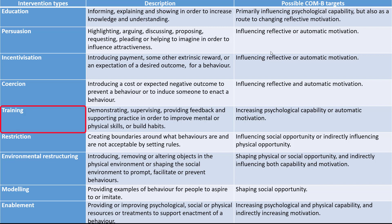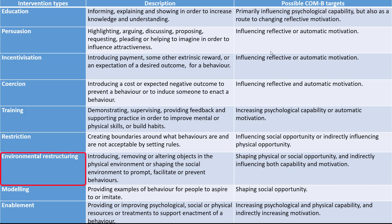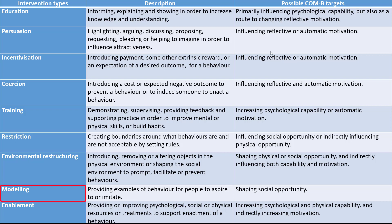Training involves demonstrating, supervising, providing feedback, and supportive practice in order to improve mental or physical skills or build habits. Restriction involves creating boundaries around what behaviours are and are not acceptable by setting rules. Environmental restructuring involves introducing, removing, or altering objects in the physical environment or shaping the social environment to prompt, facilitate, or prevent behaviours. Modelling involves providing examples of behaviour for people to aspire to or imitate. And finally, enablement is providing or improving psychological, social, or physical resources or treatments to support enactment of a given behaviour.